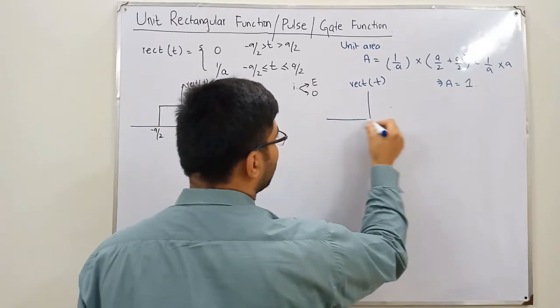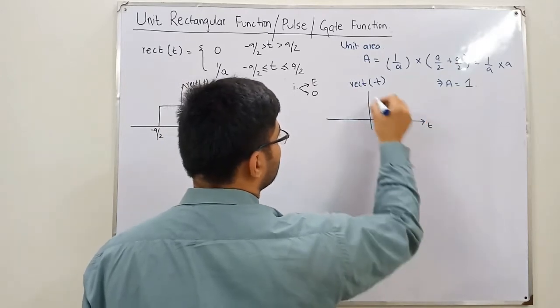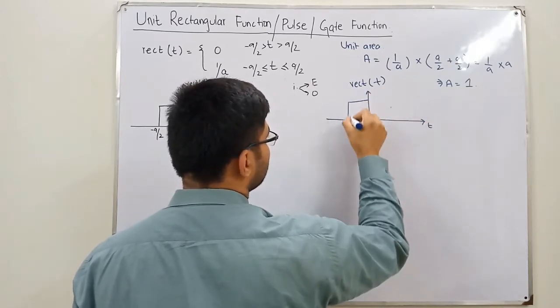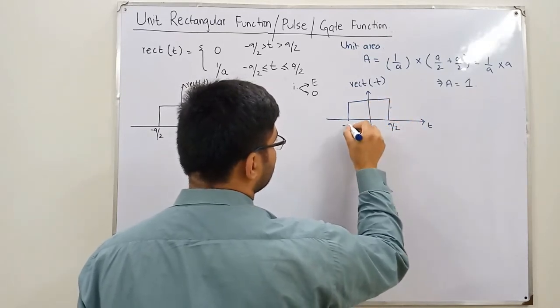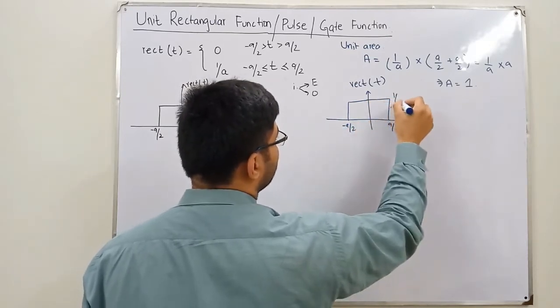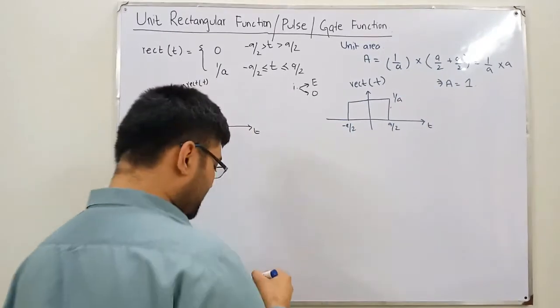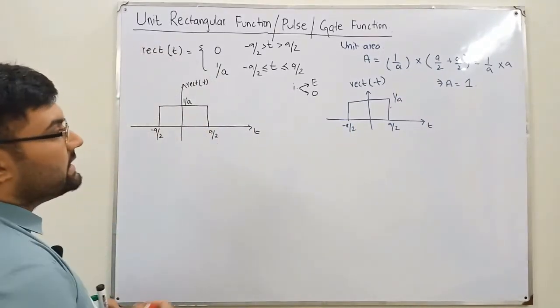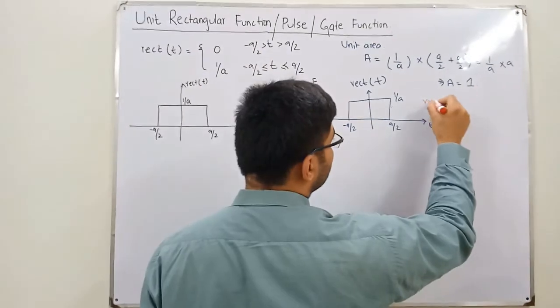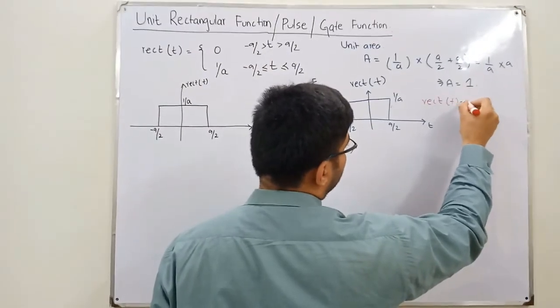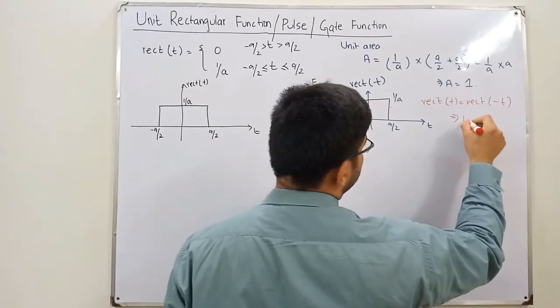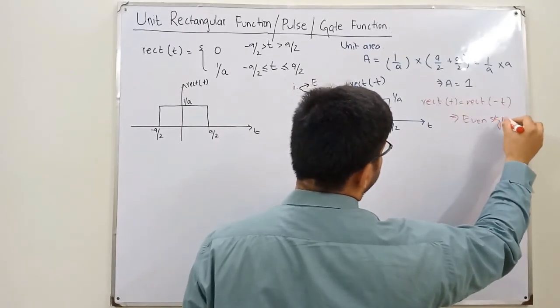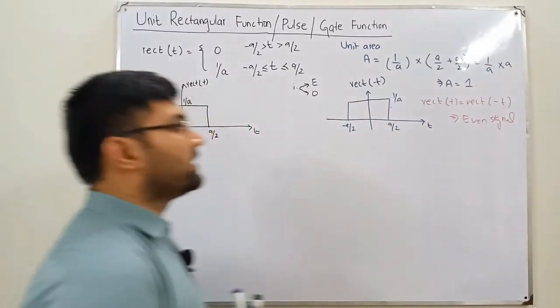This is positive a by 2, this is negative a by 2. The height is 1 over a. So have a look: rect of t is equal to rect of minus t. So which means that this is an even signal. Is that fine?